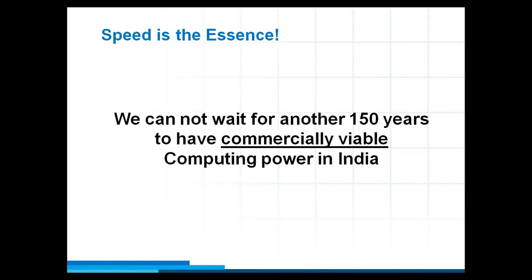When I say computing power, as shown in the past few slides, it includes hardware, network, storage, operating systems, middleware machines, and different infrastructure. That is what generates computing power. That computing power needs to be commercially available — then only I think the changes will really emerge very fast.